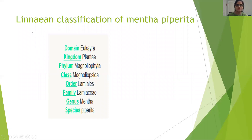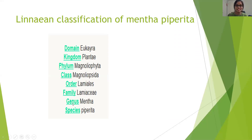This is the Linnaean classification of Mentha piperita. The domain this organism belongs to is Eukarya, as it is a multicellular organism. The kingdom it belongs to is Plantae, as it produces cellulose with the help of photosynthesis. The phylum it belongs to is Magnoliophyta and the class is Magnoliopsida. The order is Lamiales. The family it belongs to is the mint family, also known as Lamiaceae. The genus is Mentha and the species is piperita.